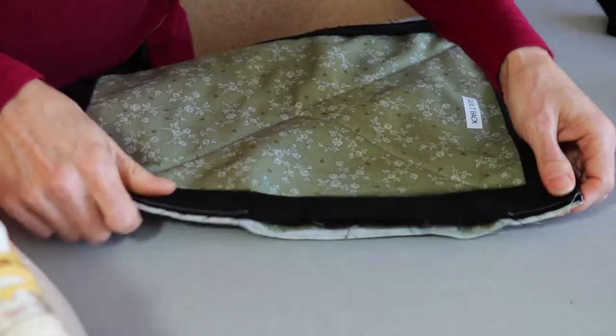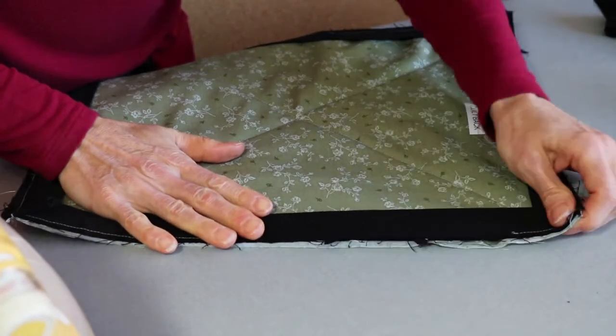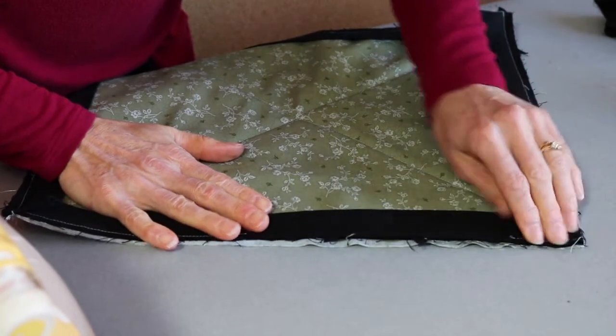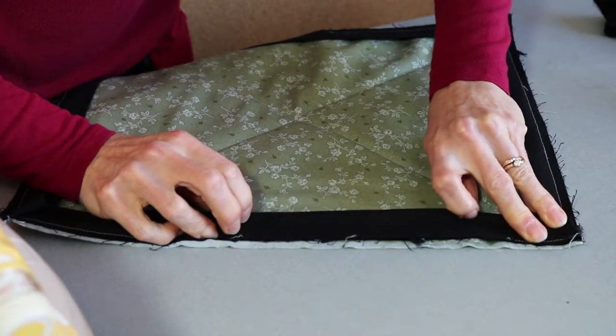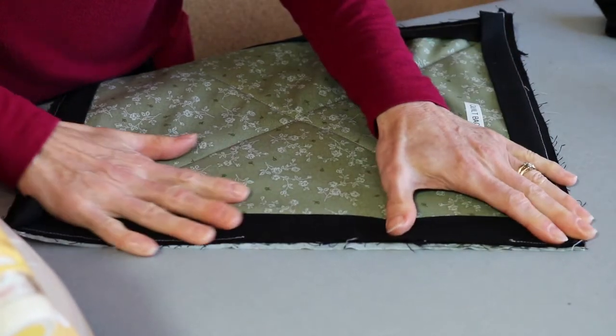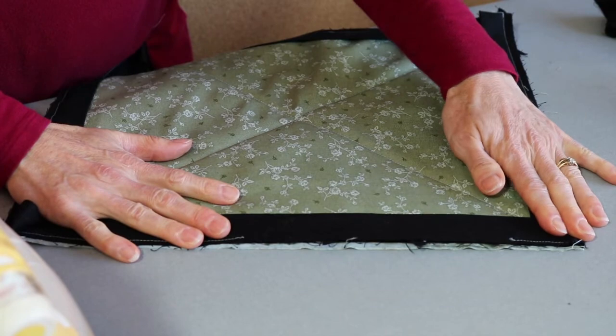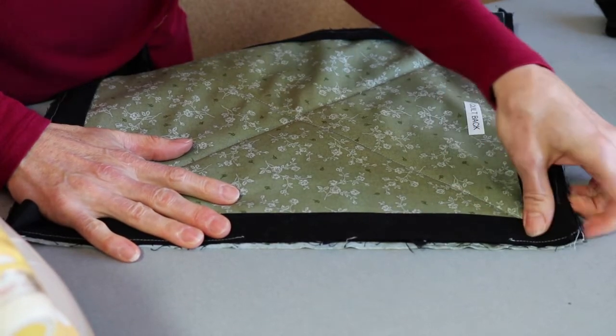Now sometimes you'll notice that you have to stretch the binding a little bit but that's okay. Cotton stretches just perfectly the right amount to allow for a nice flat binding and the final sewing over to the machine.